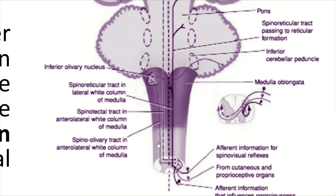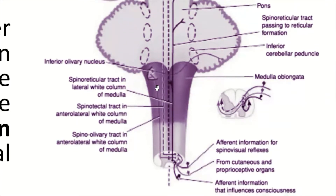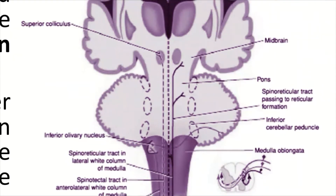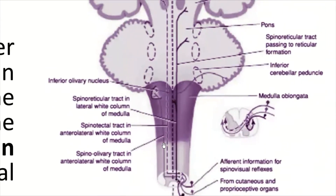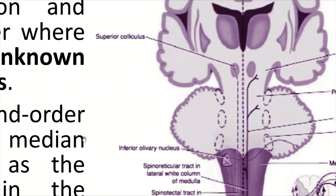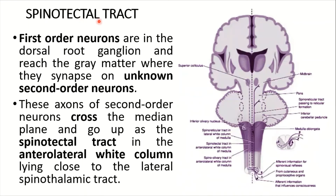The spinotectal tract ascends in the anterolateral column of the spinal cord. It crosses the medulla and the pons and ends in the superior colliculus of the midbrain. The first-order neurons are in the dorsal root ganglion, the second-order neurons are in the dorsal gray column, and they terminate on the superior colliculus.